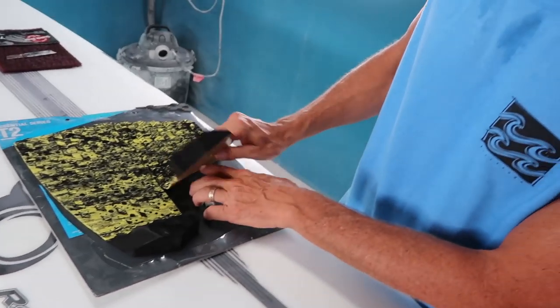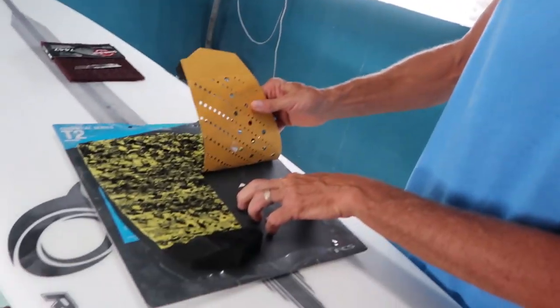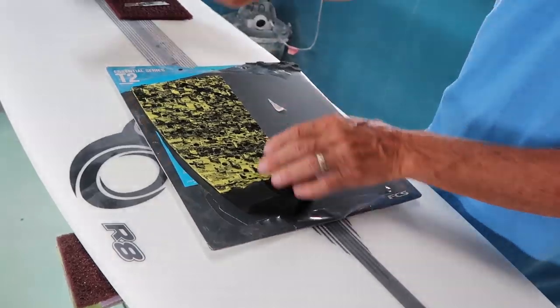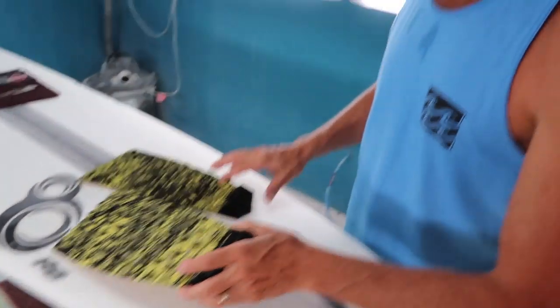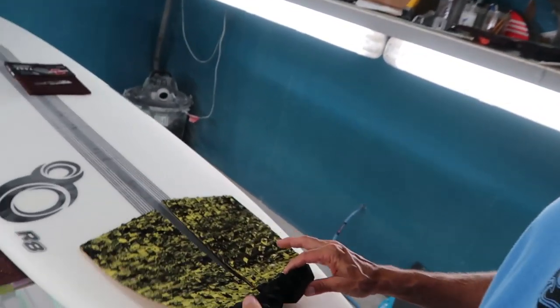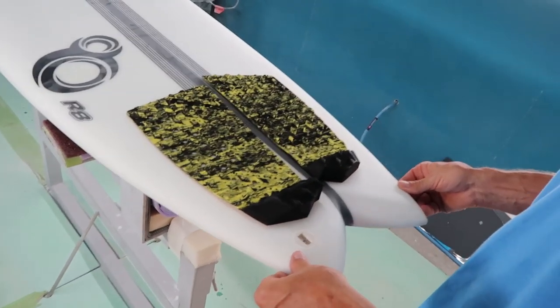Sometimes you know they put these little sticky glues on here you got to be careful not to rip it up. Just be careful with it. All right so when you first get one of these pads, it was specifically for a hybrid fish.